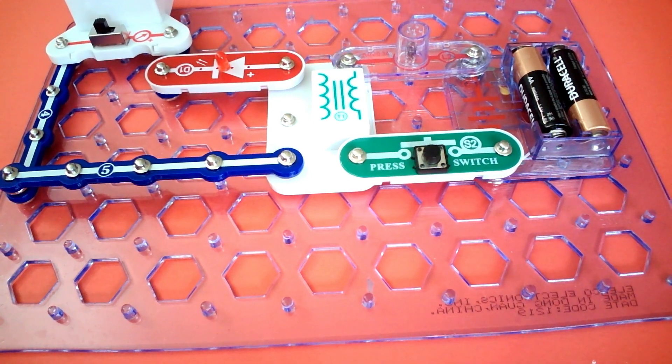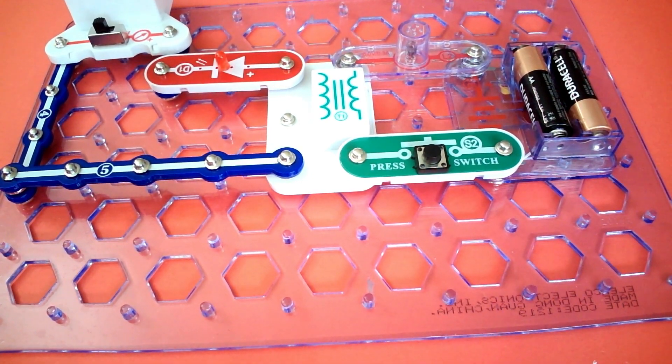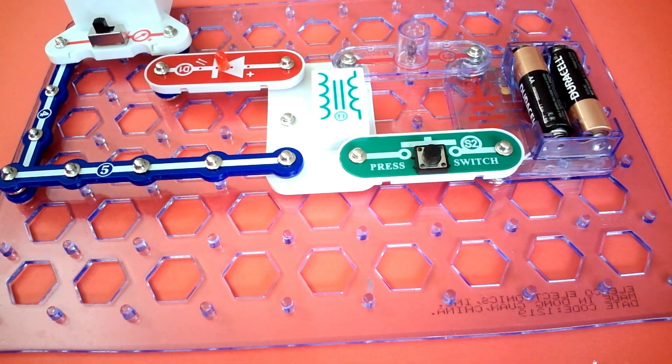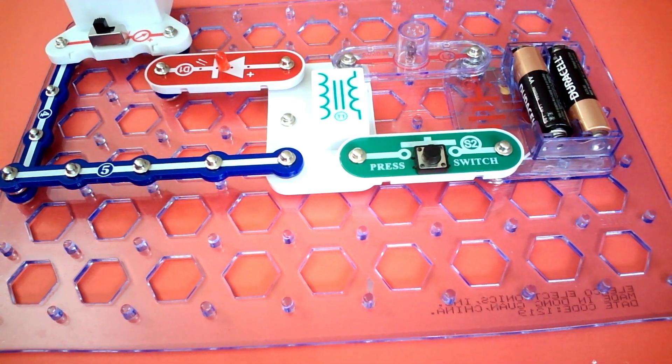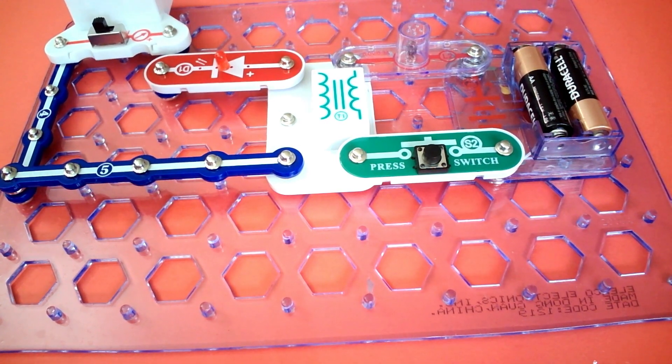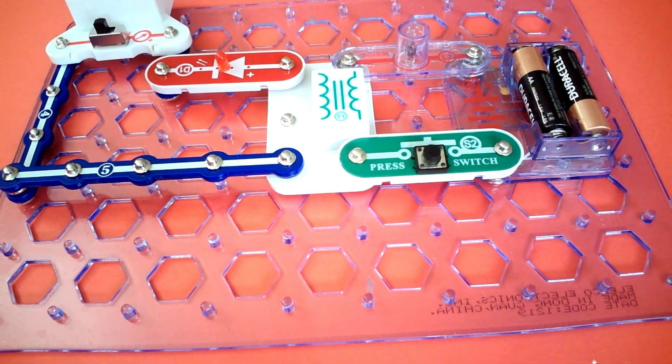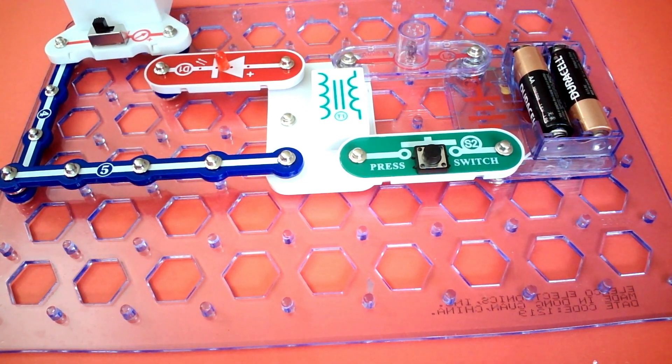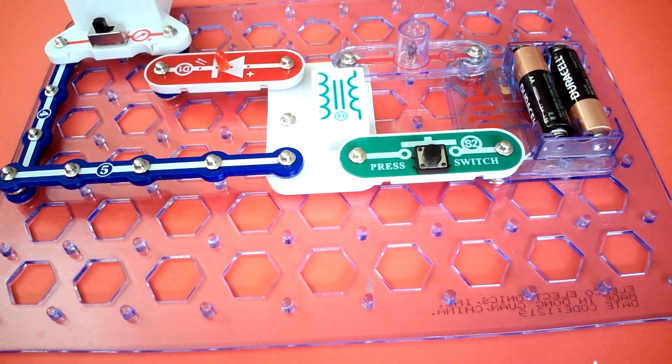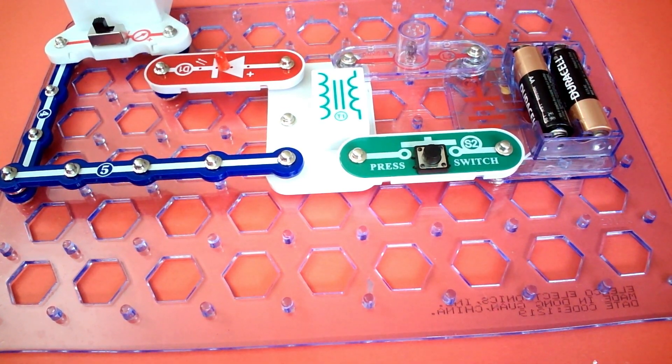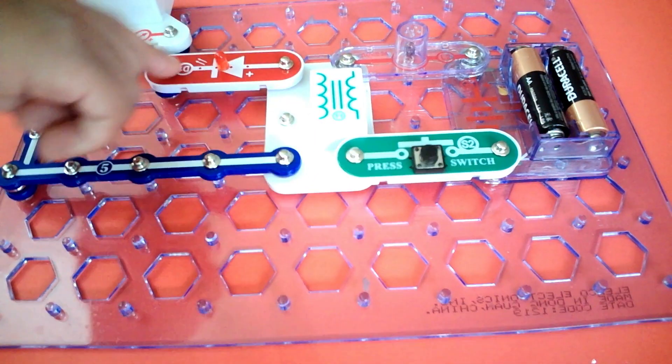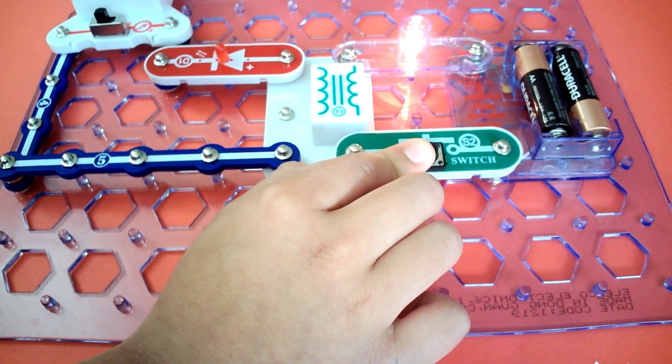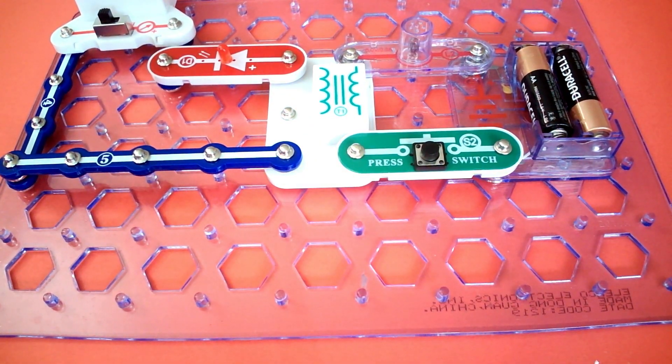It's changing the current. It only gets the current flow in one direction. AC current stands for alternate current. This is used to only let the current flow in one direction. When you press it, it allows you to convert an AC current to DC current.